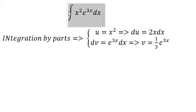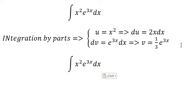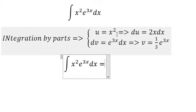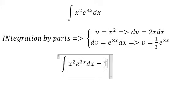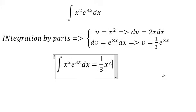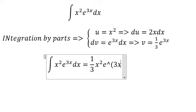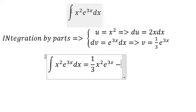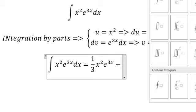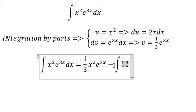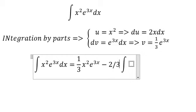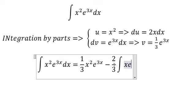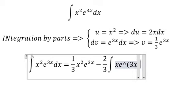So we have this integral in here. And now we can put the answer. v multiplied with u is 1 over 3 x square e power 3x minus the integral in here. We put 2 over 3 outside. We have x and e power 3x dx.